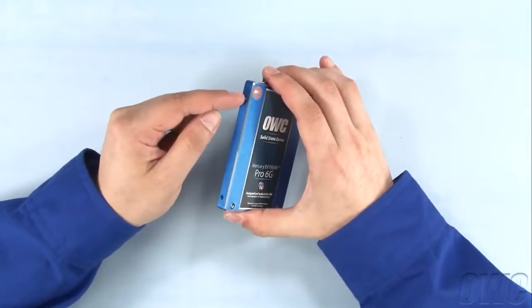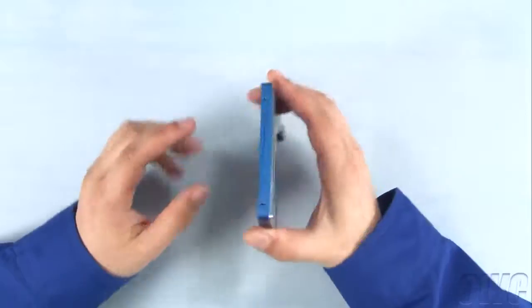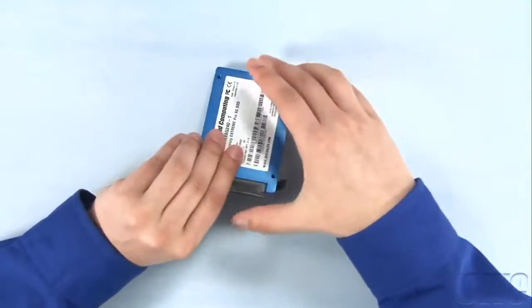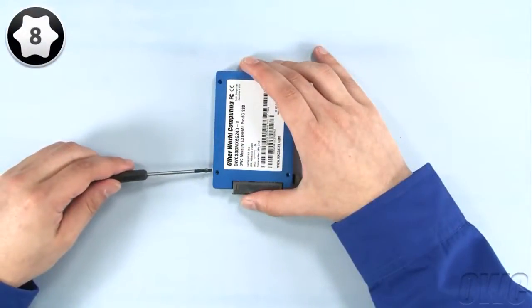Next, attach the two mounting pins in these two spots. Since we're installing an SSD, we're not going to replace the plastic cover. Otherwise, this is where you'd do it.